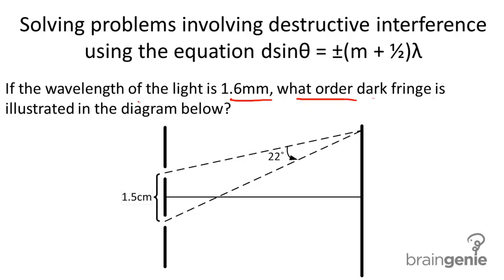Let's list out our key information. We have the wavelength of light, which is 1.6 millimeters. Converting this to meters, we get 1.6 × 10^-3 meters.